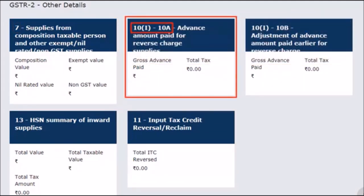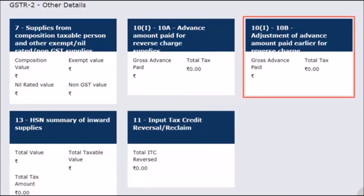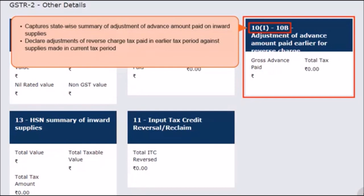The next tile covers Section 10A, which relates to the advance amount paid against reverse-charged supplies. Here, the receiver taxpayer needs to add the statewide summary of tax liability accrued from advances paid for inward supplies subject to reverse charge, including advances paid to both registered and unregistered taxable persons. Similarly, in Section 10B, the statewide summary of adjustment of advance amount paid on inward supplies has to be declared — it is for declaring adjustments of reverse-charged tax paid in an earlier tax period at the time of receipt of advance, for which supplies are made in the current tax period.